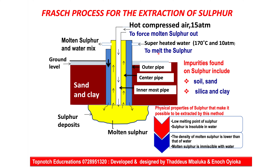We have the innermost pipe which contains hot compressed air at 15 atmospheres. The role of this is to force the molten sulfur out. The melting point of sulfur is between 113 and 119 degrees Celsius, so at 170 degrees it melts. Once it becomes molten, the hot compressed air forces the molten sulfur out through the middle pipe, where it is taken to the collection tank.